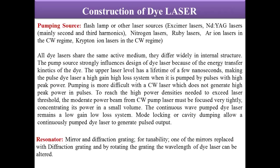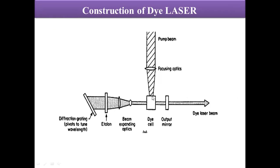This is the simple construction of a dye laser. Here we have the dye cell — a quartz cavity filled with the dye dissolved in a solution. There is an output mirror which is partially reflecting, and a diffraction grating to tune the wavelength. A focusing lens is used to focus the pump laser source onto the dye cell. When the laser light is focused on the dye, the dye molecules get excited and we get lasing action due to stimulated emission.